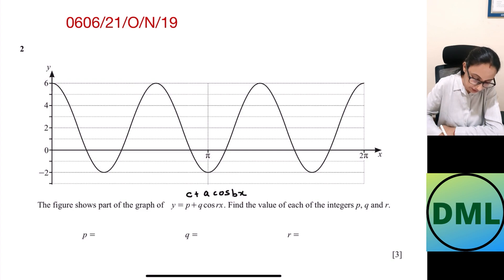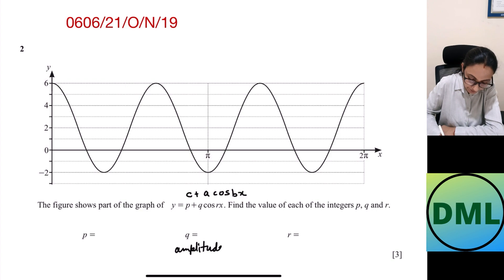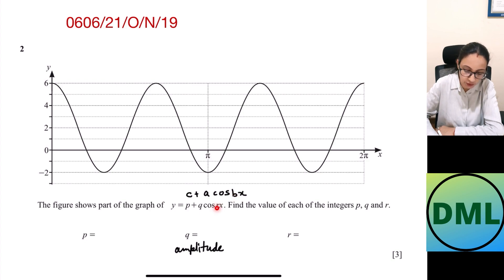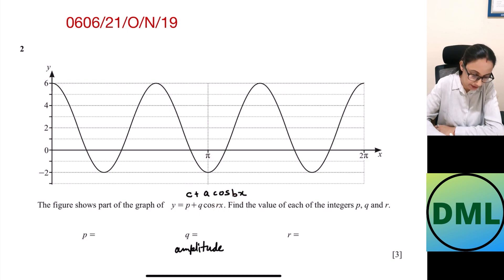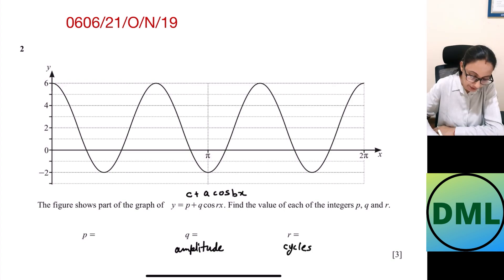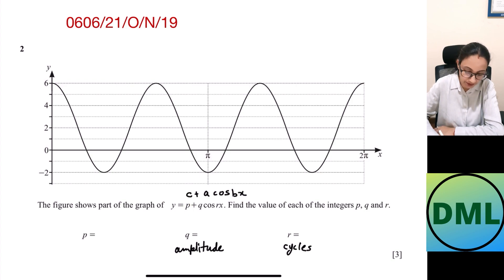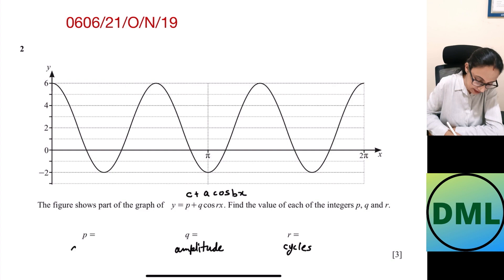So q will be our amplitude. If we compare the b value, here b is equal to r, so r will show you the number of cycles inside the period. If we compare the value for c, c is equal to p, so p will be your axis.